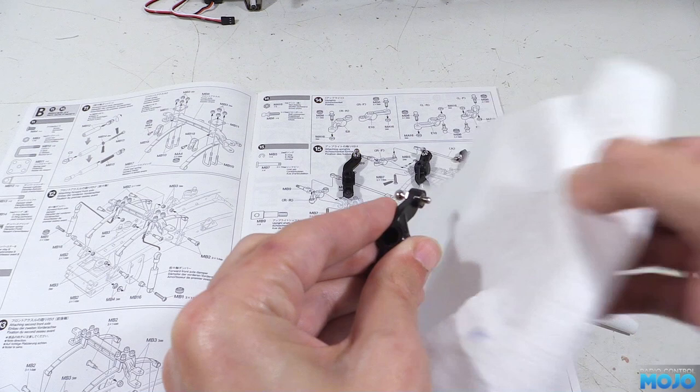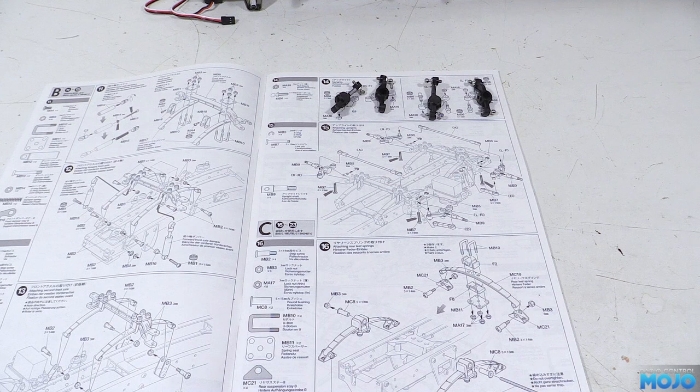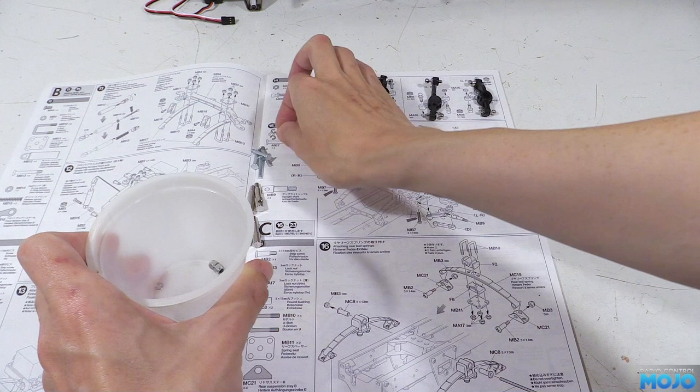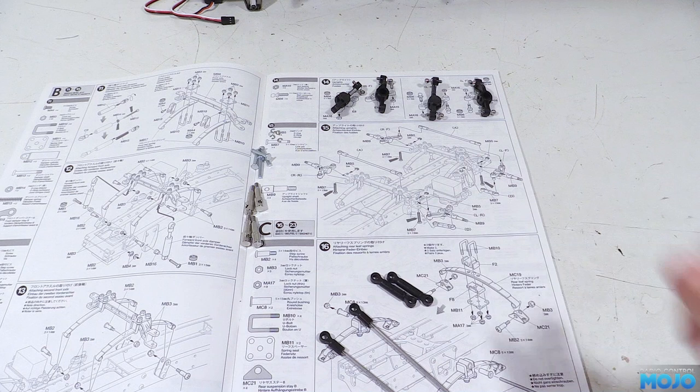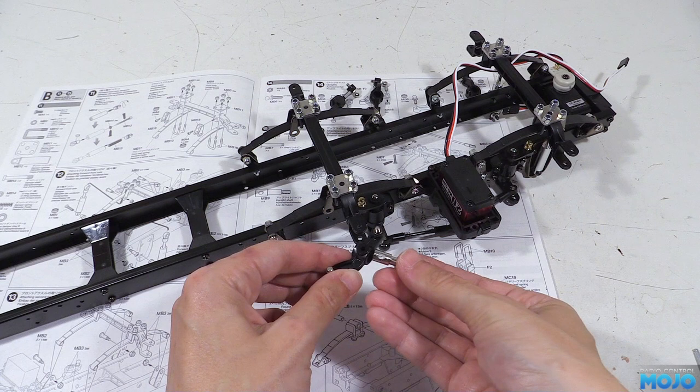Step 15. Attaching the uprights. We'll need the four upright shafts, four kingpins and four two millimetre E-clips. From the previous bag we need the two long and two very short rods and the chassis. To assemble we put one of the shafts into an upright, add some grease to the hole and sit it in the end of the axle.